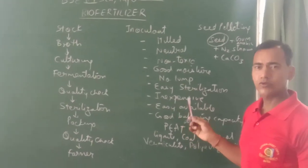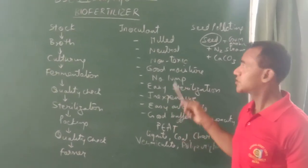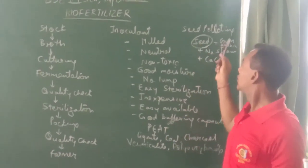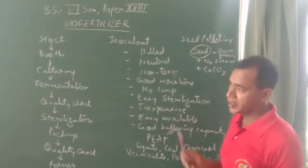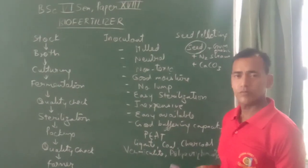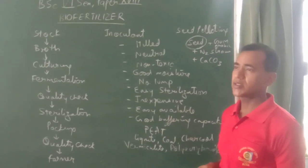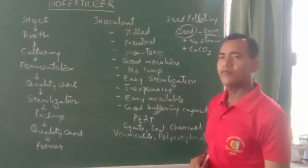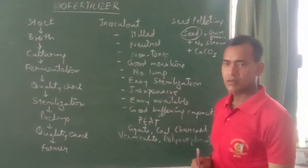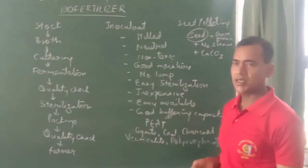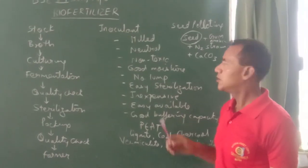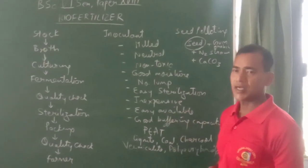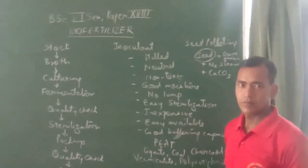This process is also applied to seeds, which are coated with gum arabic or some sugary syrup along with nitrogen-fixing strain bacteria or algae, and finally calcium carbonate. Thank you.